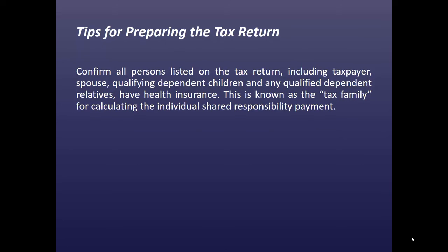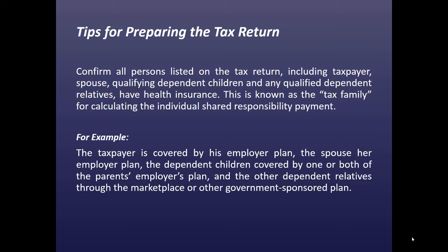Some tips for preparing this tax return: you want to confirm that all persons listed on the tax return, including the taxpayer, the spouse, the qualifying dependent children, and any qualified dependent relatives, all have health insurance. This is known as the tax family for calculating the individual's shared responsibility payment. For example, the taxpayer is covered by his employer plan, the spouse by her employer plan, the dependent children by one or both of the parent's employer's plans, and the other dependent relatives through the marketplace or other government-sponsored plan.